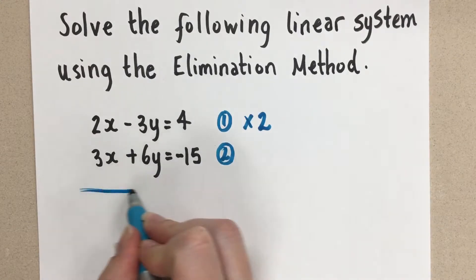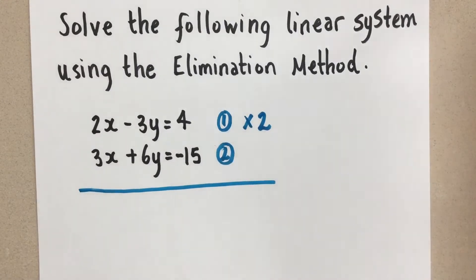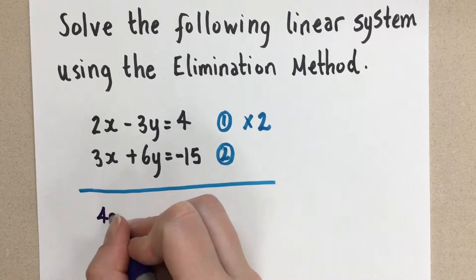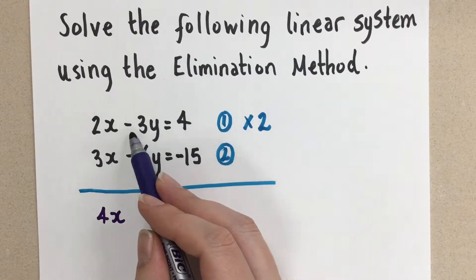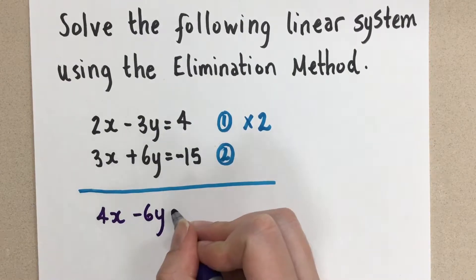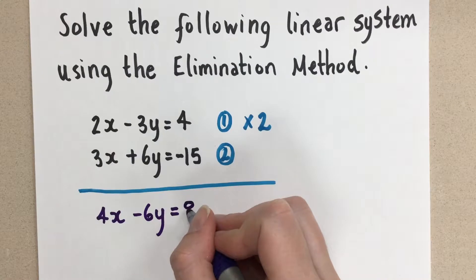So let's rewrite this now. Here, I'm going to rewrite my two equations. So if I take a 2x and multiply it by 2, I get 4x. And negative 3y times 2, I get negative 6y. And then 4 times 2,